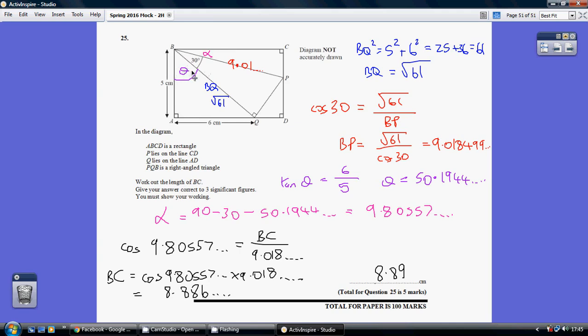So back to this triangle, I'm saying that calling this theta. So tan theta is opposite over adjacent is 6 over 5. So tan theta is 6 over 5. So theta equals inverse tan 6 over 5, which is 50.1944 dot dot dot. That's at this angle here.